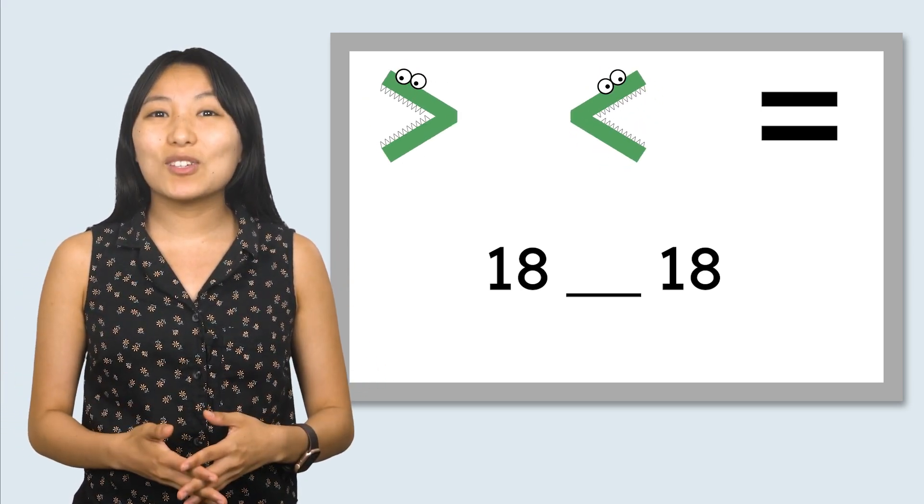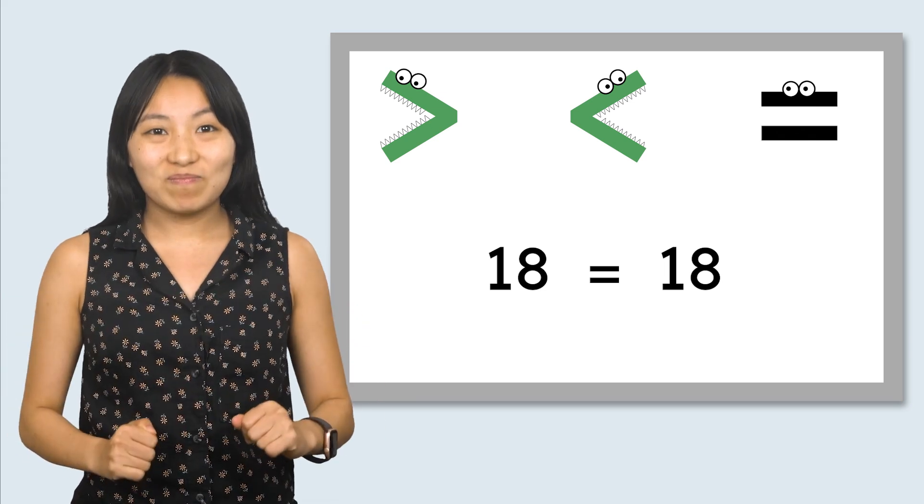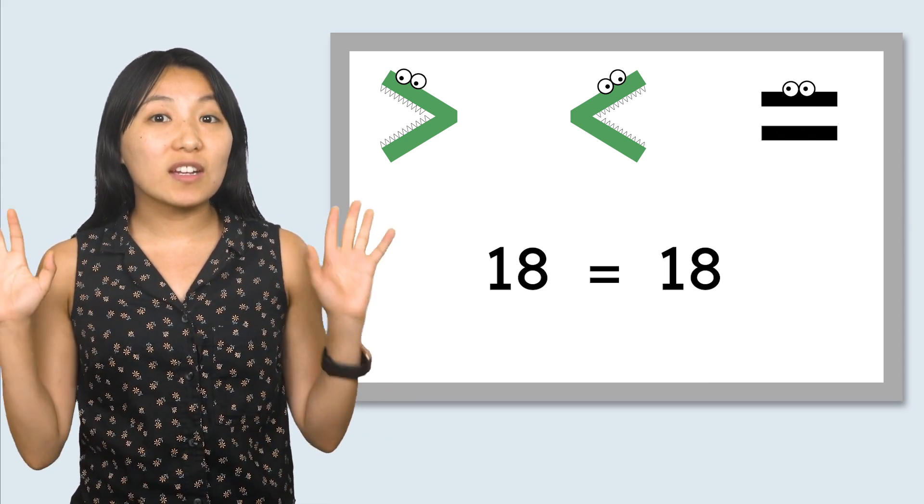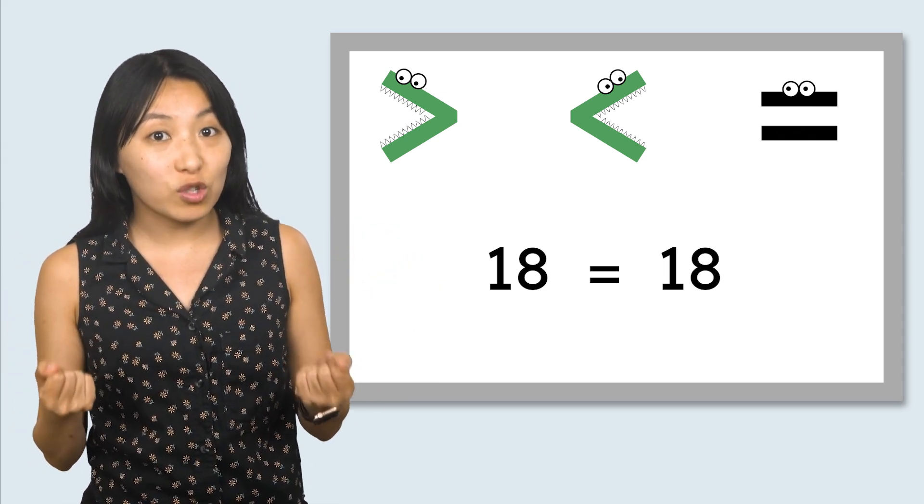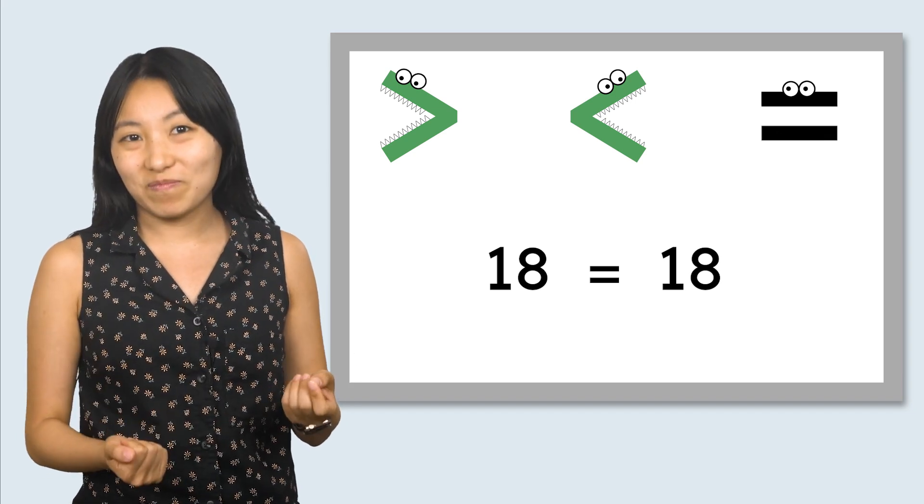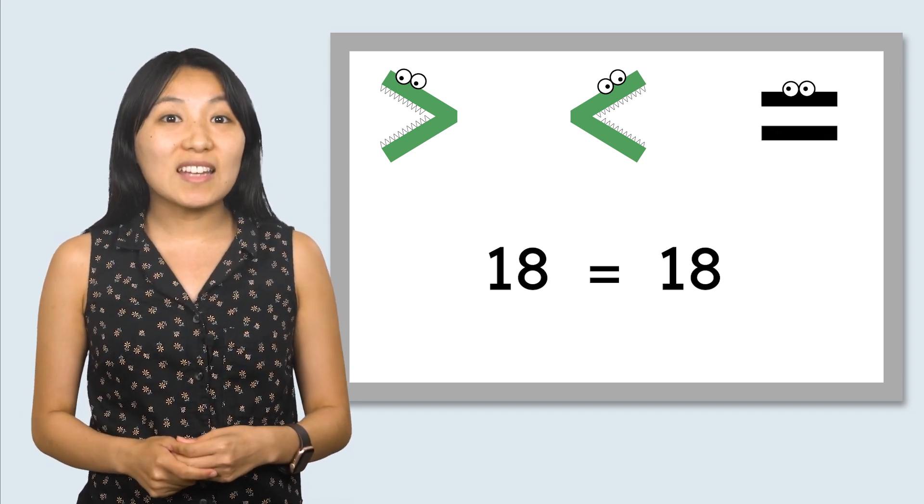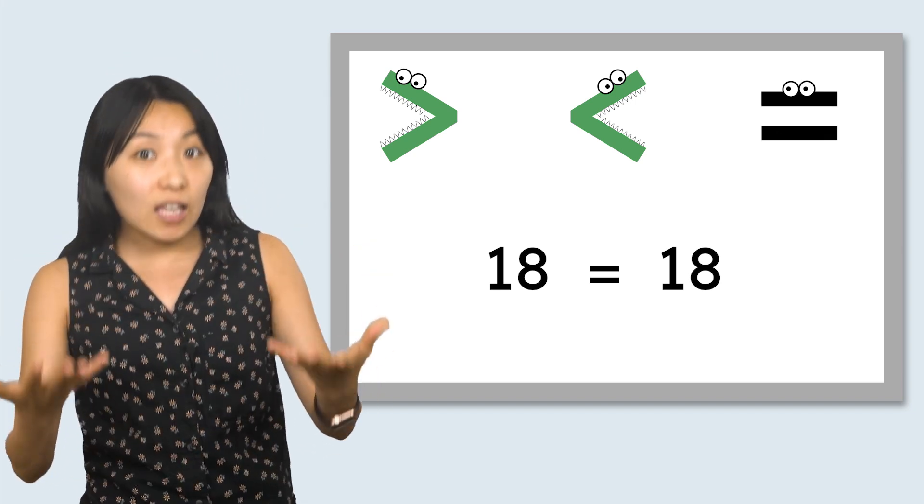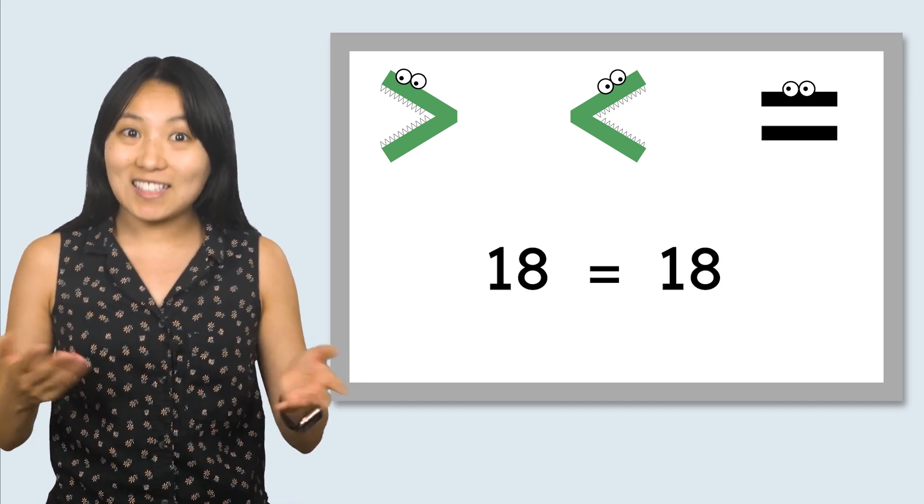In this case, we use the equal sign. The equal sign shows us that the numbers on each side are equal to each other or the same. The equal sign shows us that 18 is equal to or the same as 18.